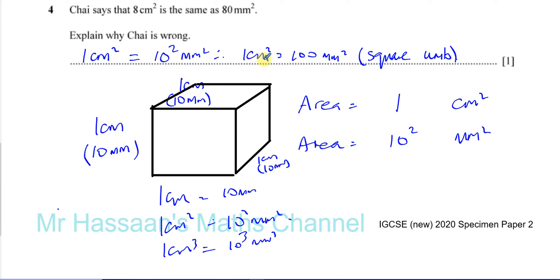Okay, so therefore, 1 cm squared is equal to 100 mm squared, so therefore, 8 cm squared is not 80 mm squared. Okay, so something like that is fine as your explanation.